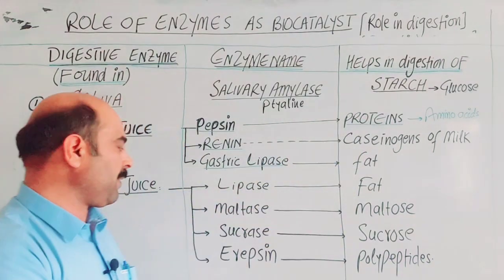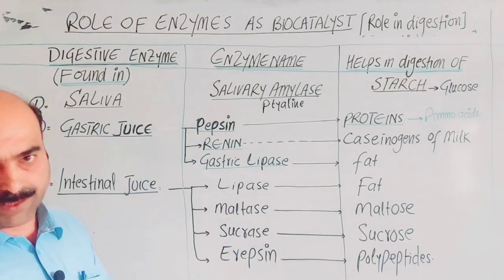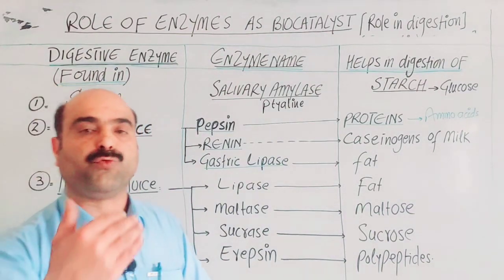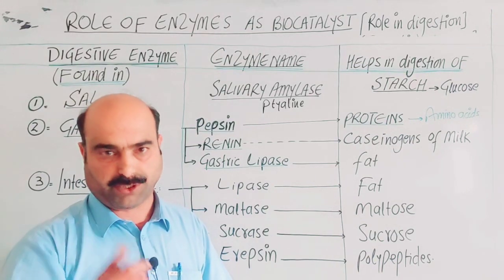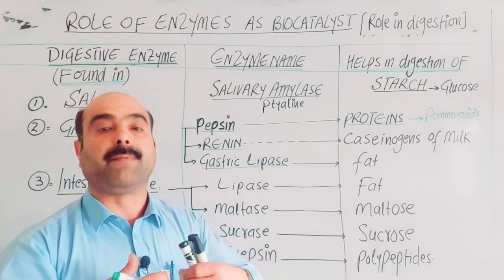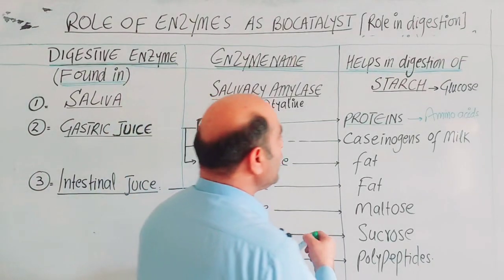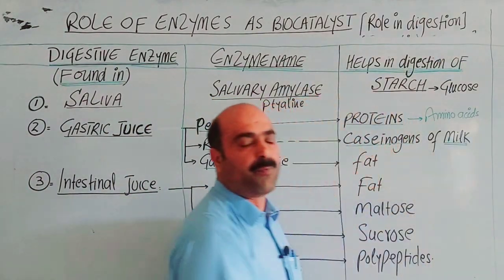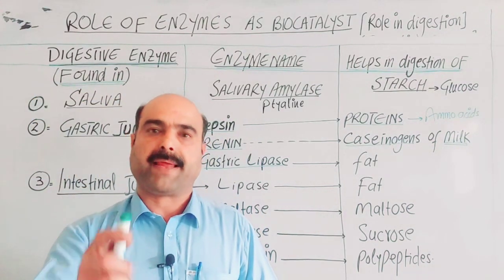Pepsin breaks down polypeptides, and erepsin further converts polypeptides into amino acids. Proteins are non-diffusible long-chain macromolecules (polymers), not soluble or diffusible, and need to be converted. For example, the protein casein is found in milk.